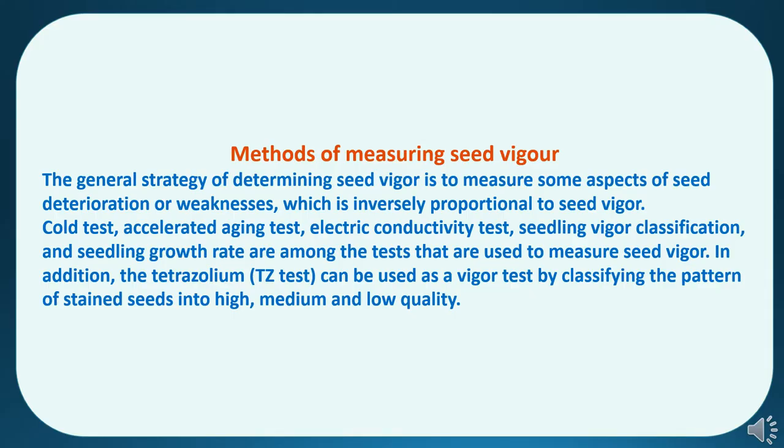The general strategy of determining seed vigor is to measure some aspects of seed deterioration or weakness, which is inversely proportional to seed vigor. Cold test, accelerated aging test, electric conductivity test, seedling vigor classification, and seedling growth rate are among the tests used to measure seed vigor. In addition, the tetrazolium TZ test can be used as a vigor test by classifying the pattern of stained seeds into high, medium, and low quality.